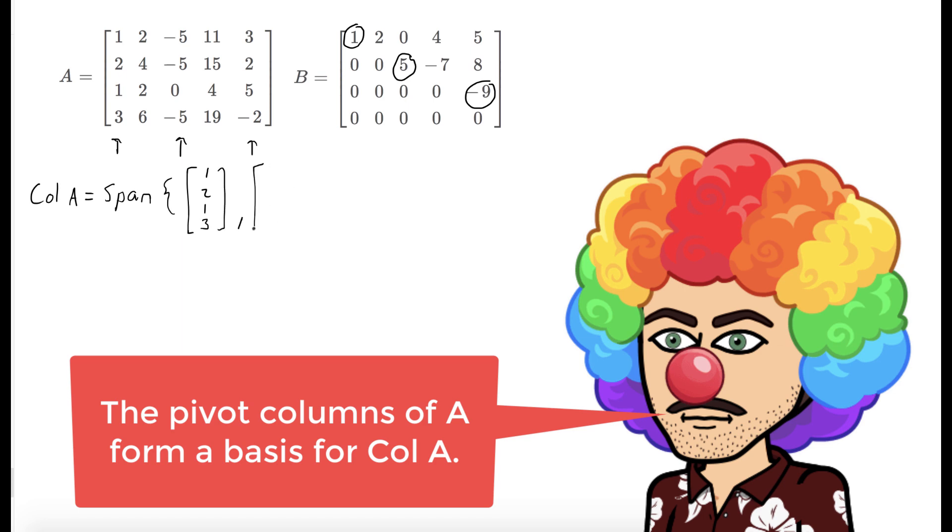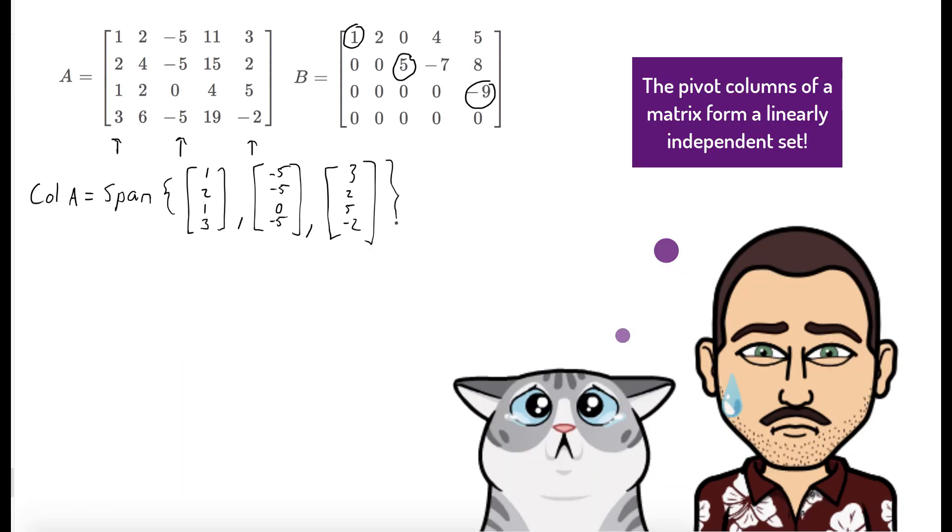So the column space of A is the span of its pivot columns. And the pivot columns form a linearly independent set. So if you have a spanning set that's linearly independent, you have yourself a basis.